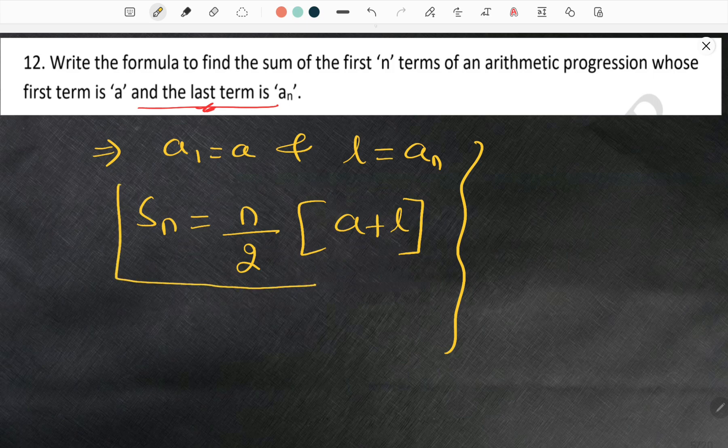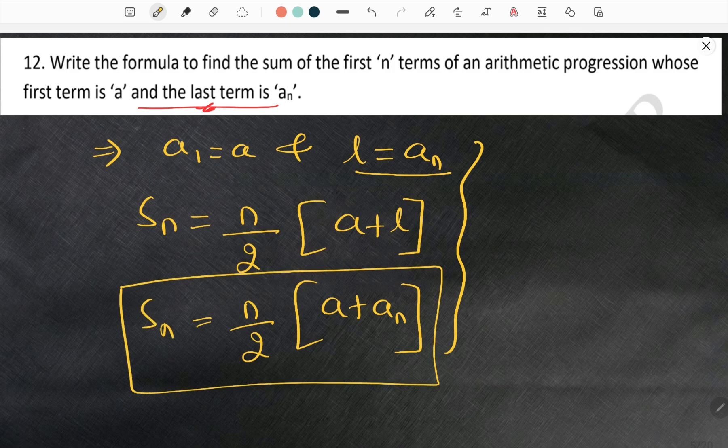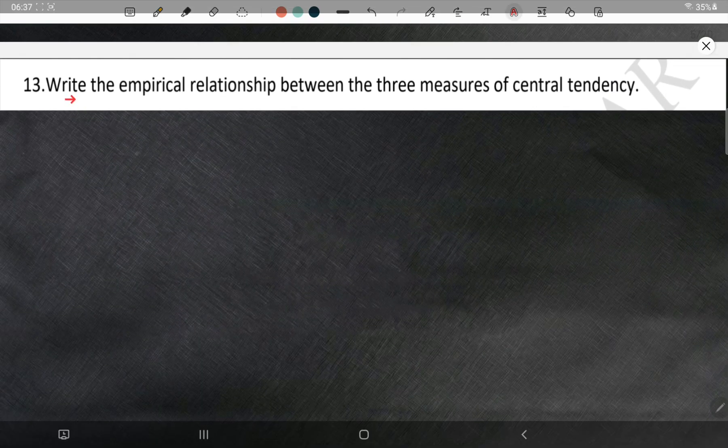Last term means N by 2 bracket A plus last term is AN. So it is represented with AN also. So SN is equal to N by 2 bracket A plus AN.